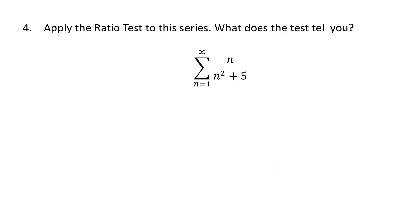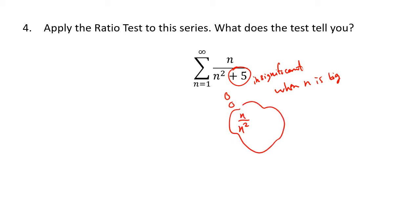So now we think about how to decide what an appropriate test is to use. We just saw that for this example series the ratio test didn't work. A good thing to do is start by thinking about comparisons — is there a piece of this series that essentially won't matter when n is very large? The plus 5 is insignificant when n is big, so this series is essentially a lot like n over n squared without the plus 5, and n over n squared is 1 over n. So this gives us a guess that this series should behave like the harmonic series, which we know diverges.